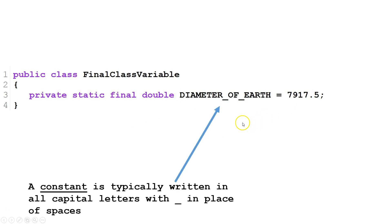A constant is typically written in all capital letters with underscores in place of spaces. This lets other programmers know that this is a constant and its value will not change.